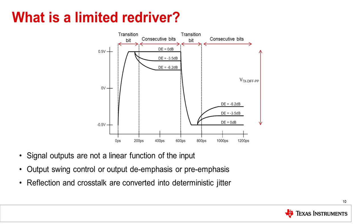The transition bit is when there is a difference between the previous and the current bit. When there is such a transition, the signal contains a high-frequency component. The consecutive bits are bits that show no difference between the previous and the current bit, and therefore contain a low-frequency component. Since losses increase with the data rate, the transition bit, which has a higher-frequency component, will be attenuated more than the consecutive bits, which has a low-frequency component. This disparity of losses between the high and low-frequency causes adjacent symbols to interfere with each other. This is called inter-symbol interference, or ISI.